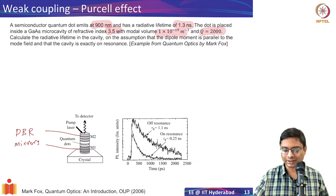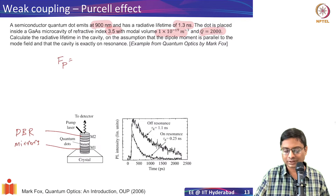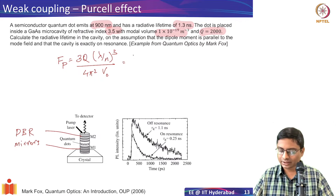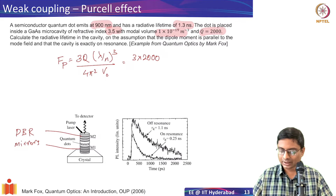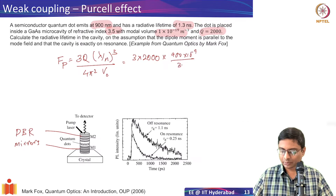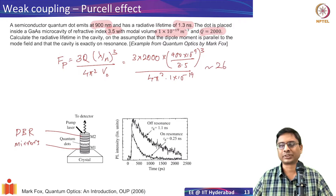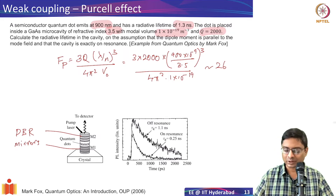How much faster depends on the Purcell factor. The Purcell factor F_p is given by: F_p = (3 / 4π²) × Q × (λ/n)³ / V. Substituting the values: Q = 2000, λ = 900 × 10⁻⁹ m, refractive index n = 3.5, and modal volume V = 1 × 10⁻¹⁹ m³. Calculating this gives approximately F_p ≈ 2.26.